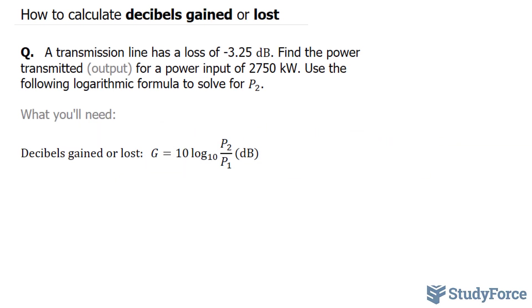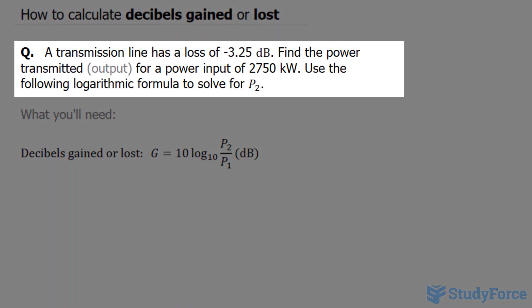In this video, I'll show you how to calculate decibels gained or lost. The question reads: a transmission line has a loss of negative 3.25 decibels. Find the power transmitted (output) for a power input of 2750 kilowatts.